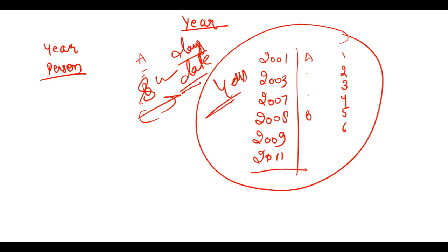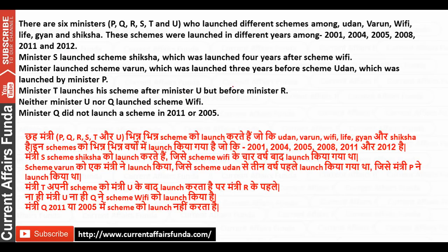The question is: there are six ministers who launched different schemes among Udan, Varun, Wi-Fi, Life, Gyan, and Shikshak. These schemes were launched in different years among 2001, 2004, 2005, 2008, 2011, and 2012. So you have different schemes and different years — two variables are used, which is why this is not a prelims-level question.